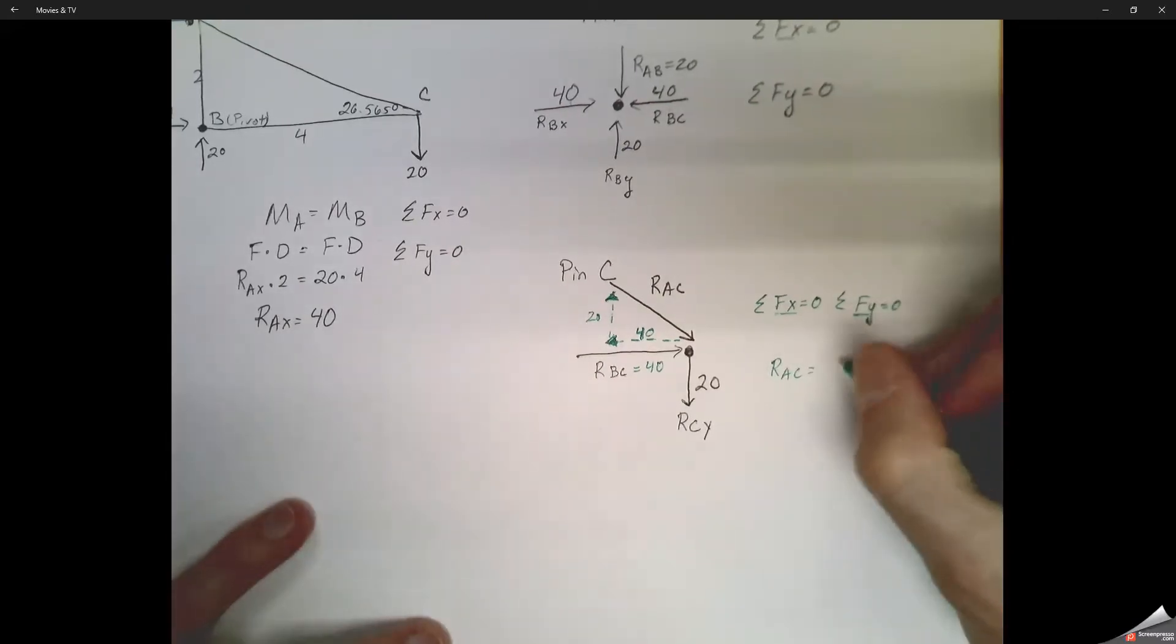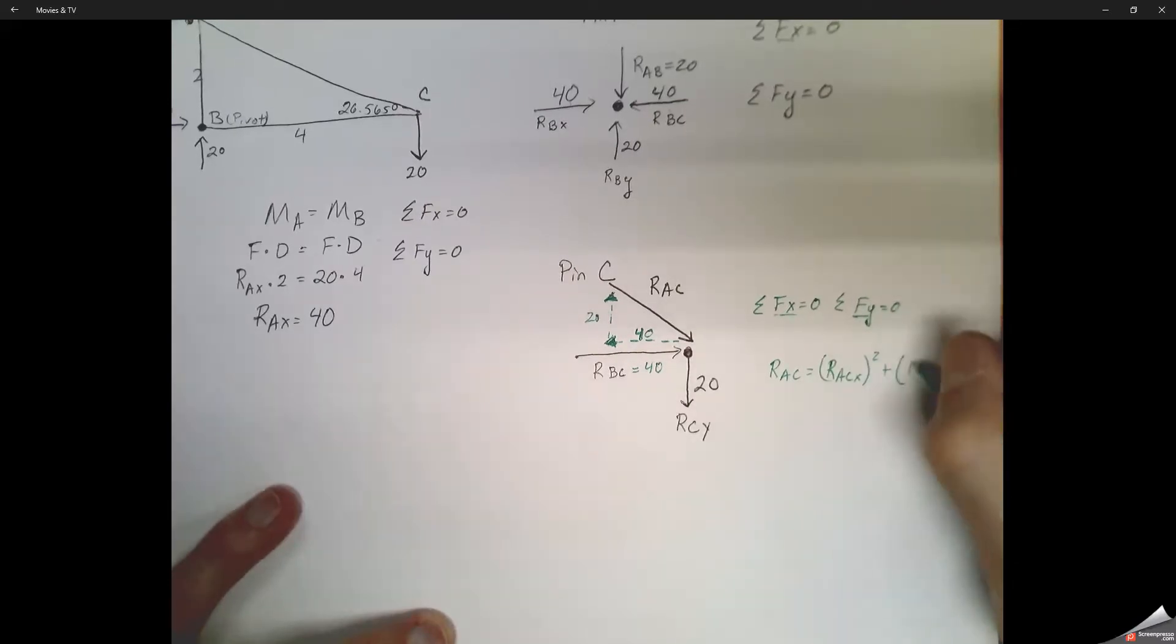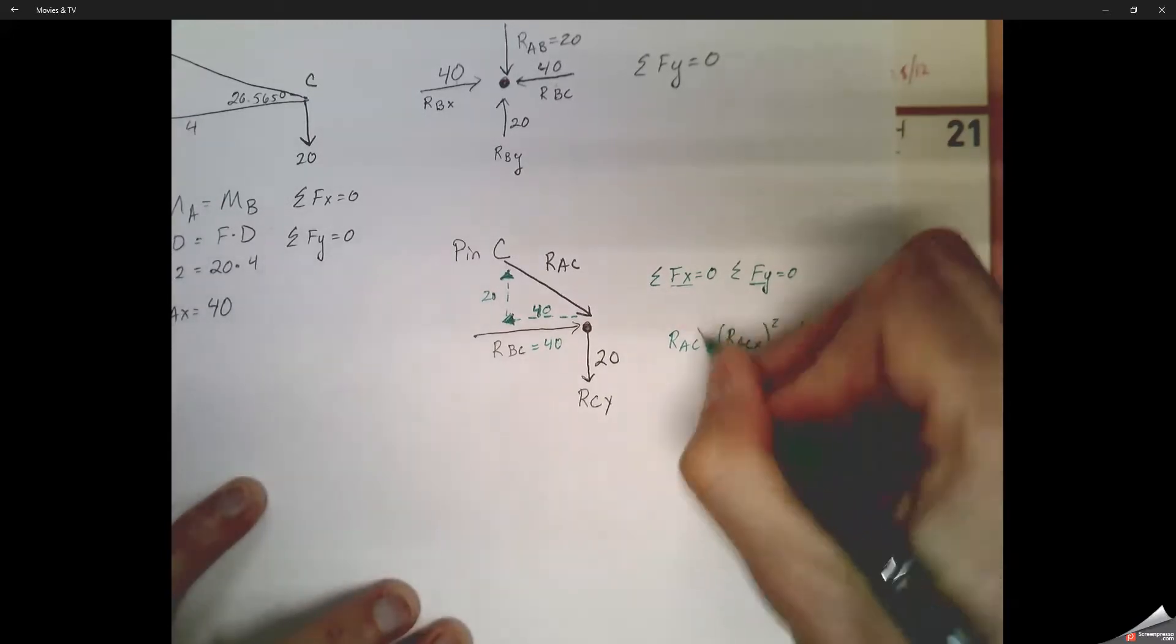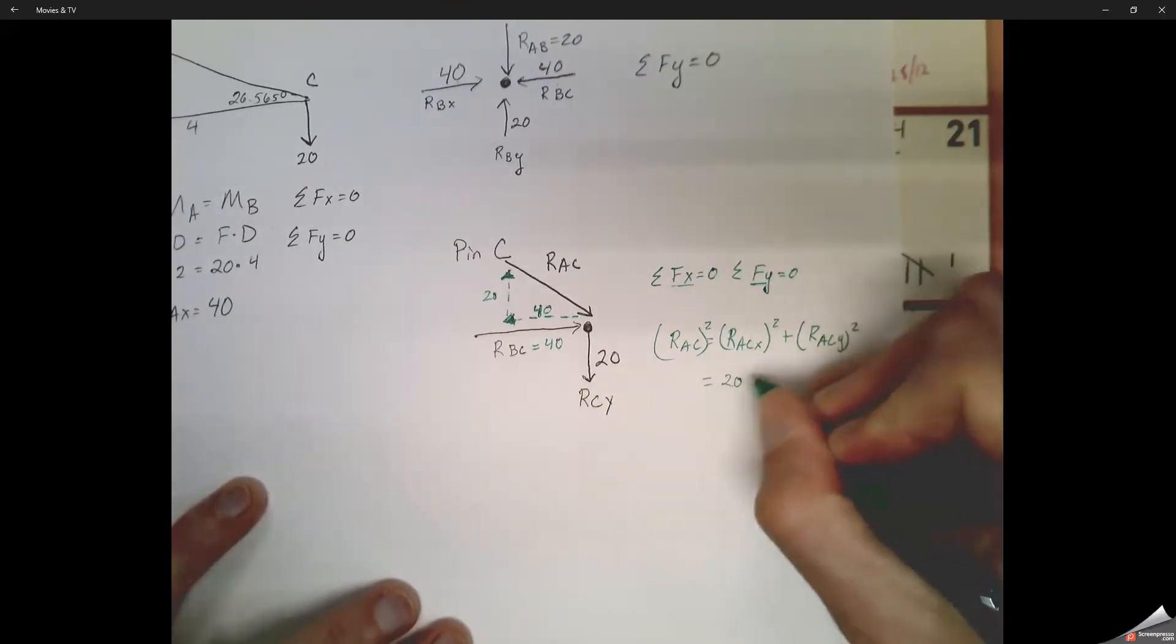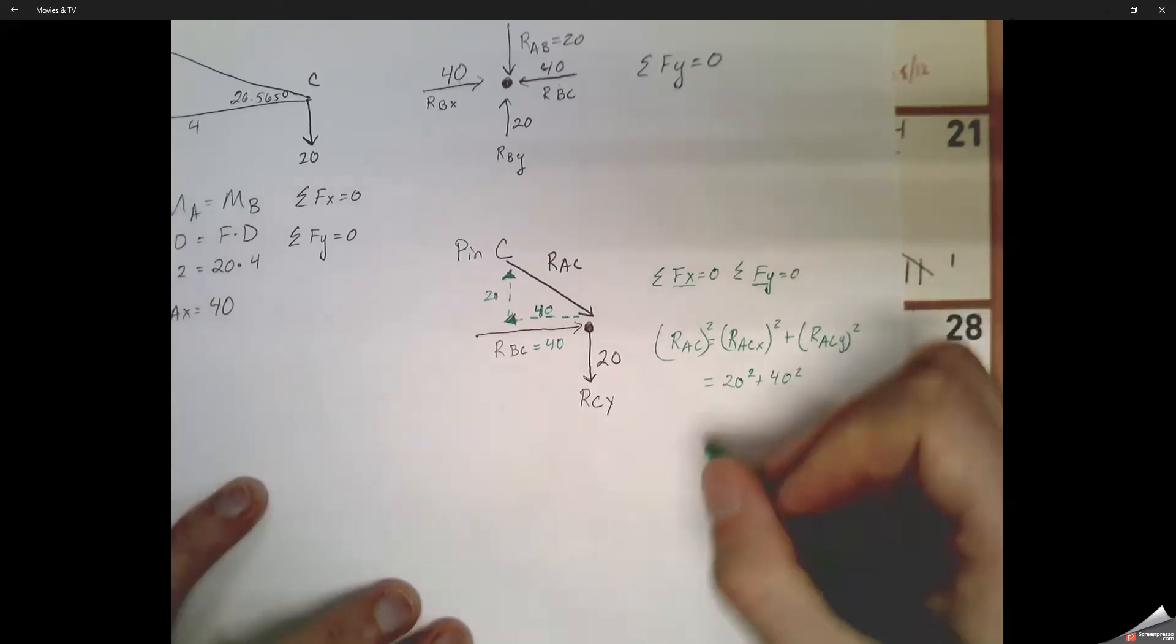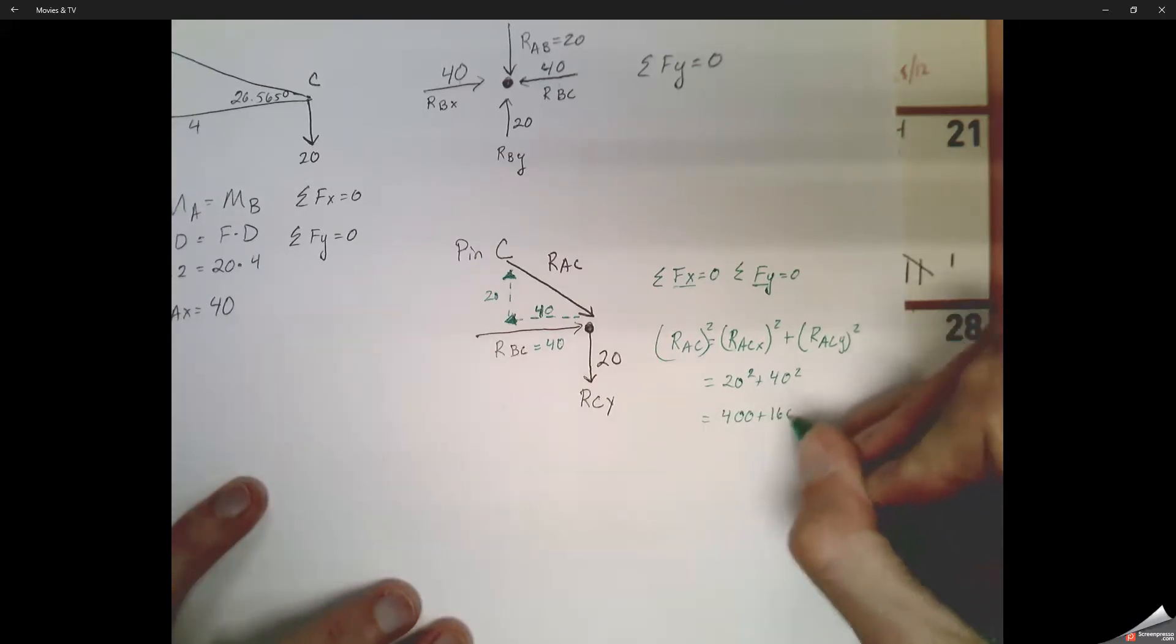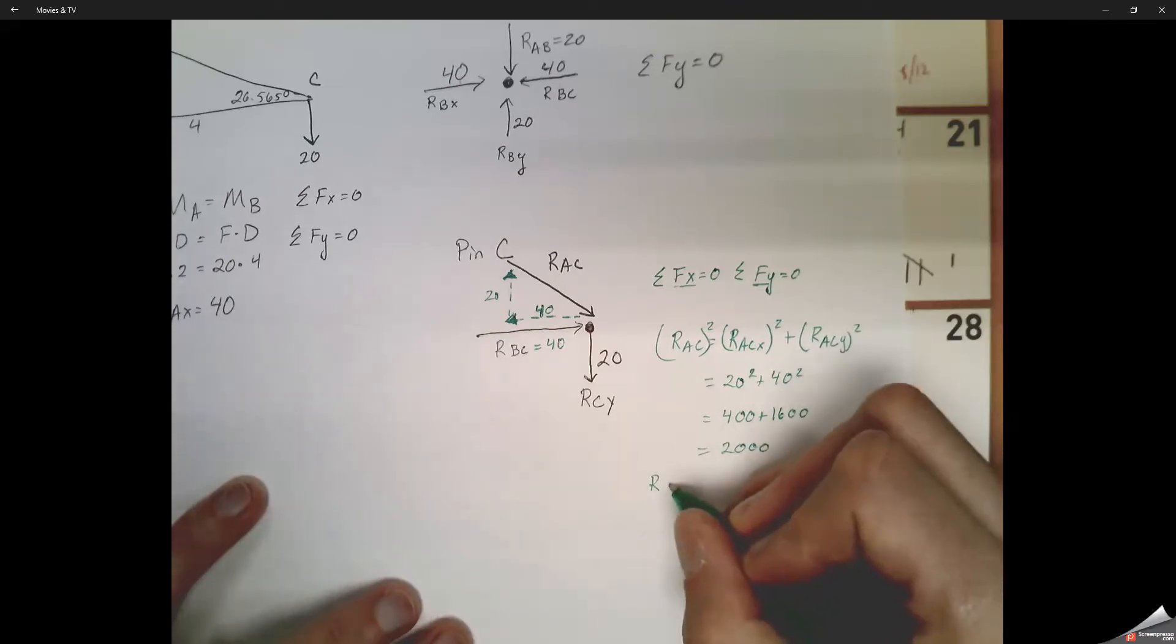So now how do we calculate our AC? Well, the Pythagorean theorem tells us that A squared plus B squared equals C squared. So we can go ahead and take 20 squared, or I guess our RAC in the X direction, plus our RCY in the X direction, both of those squared, and then the square root. So 20 squared plus 40 squared, 20 squared gives us four with two zeros, so 400. 40 squared gives us 16 with two zeros, so 1,600. Sum of both those is 2,000.